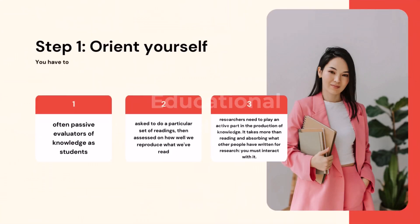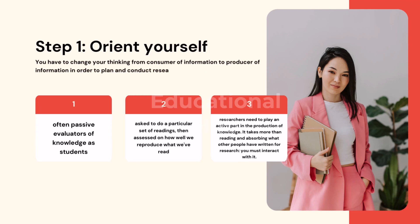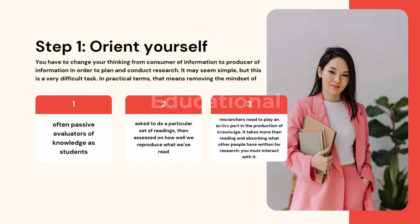Step 1: Orient yourself. You have to change your thinking from consumer of information to producer of information in order to plan and conduct research. It may seem simple, but this is a very difficult task. In practical terms, that means removing the mindset of a student who thinks knowledge is something created by other people. We are often passive evaluators of knowledge as students, asked to do a particular set of readings, then assessed on how well we reproduce what we've read. However, researchers need to play an active part in the production of knowledge.